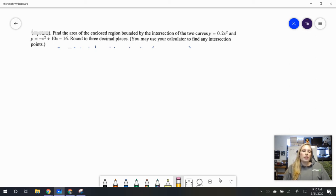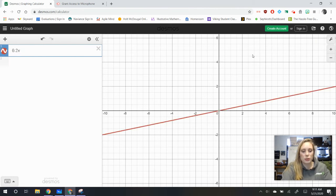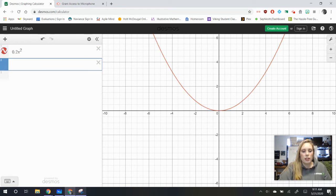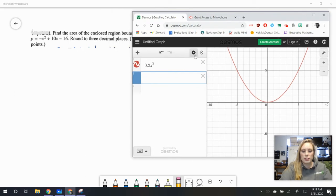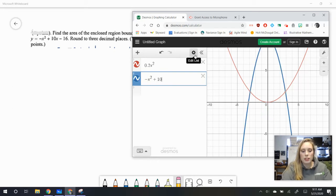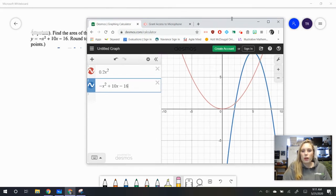The first part of this is we're going to want to draw this out. So let's go ahead and graph these two curves in Desmos. I've got Desmos ready to go here. The first one was 0.2x squared, and then the other one was negative x squared plus 10x minus 16. And we want the region where these two are bound.